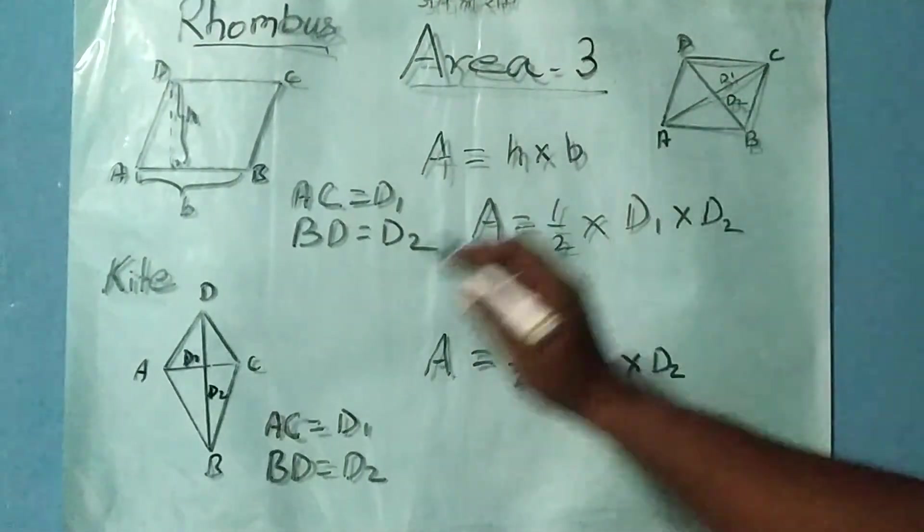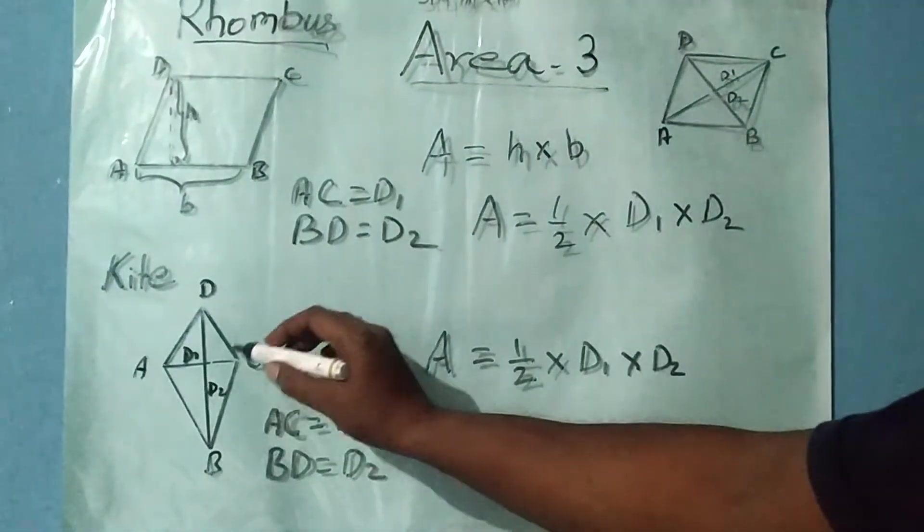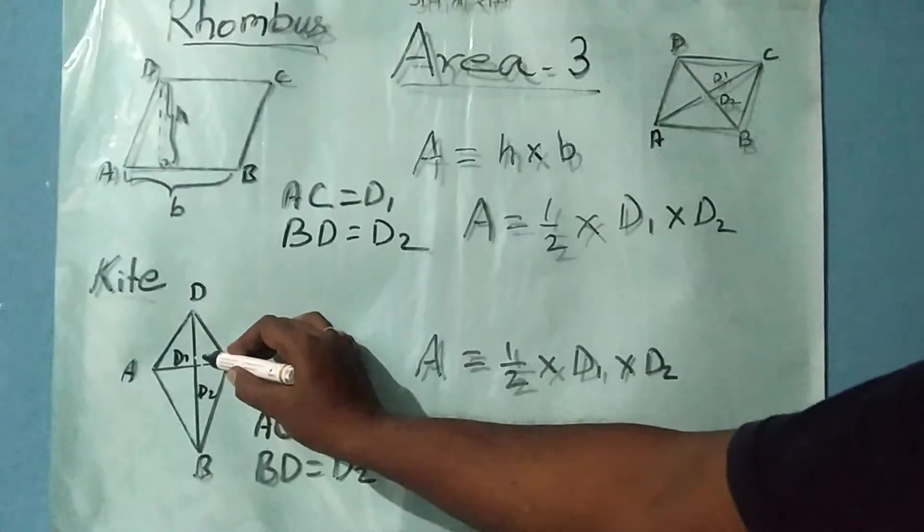In rhombus and kite, the diagonals intersect each other at 90 degrees.